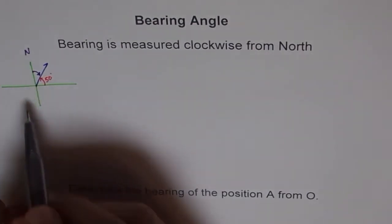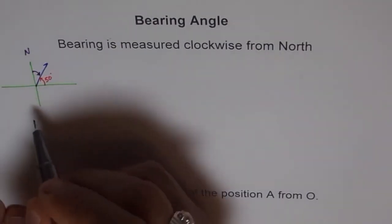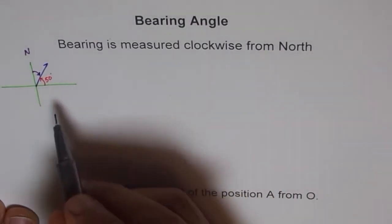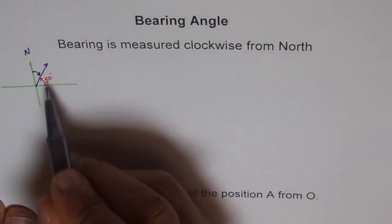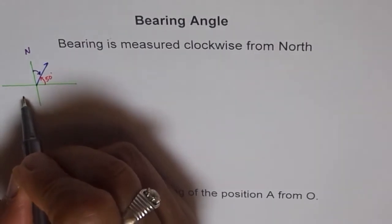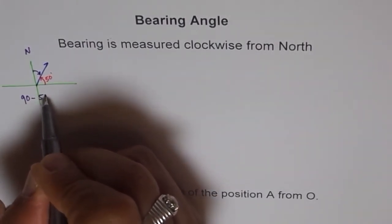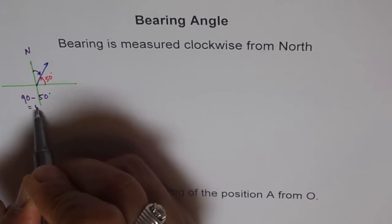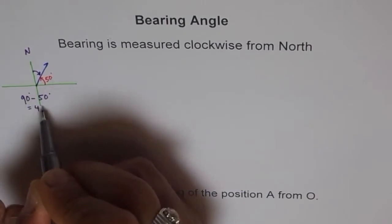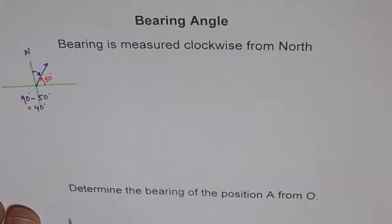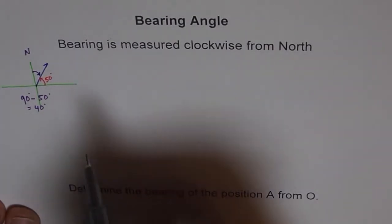So in this particular example, what is the angle of bearing? The angle of bearing here is 90 minus 50, so it is 40 degrees. We get 90 minus 50 which is equal to 40 degrees. So the angle of bearing in this case is 40 degrees. Let's do some more.